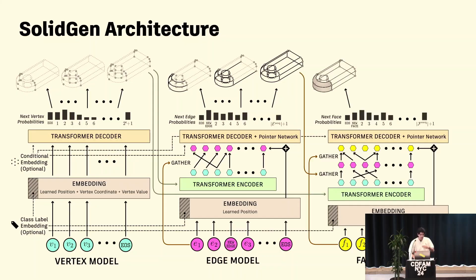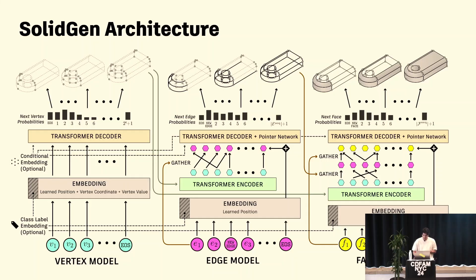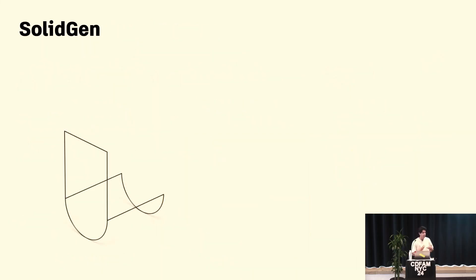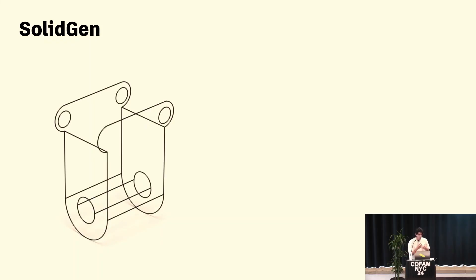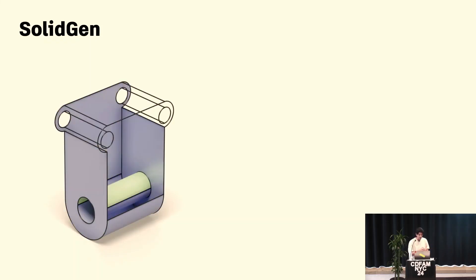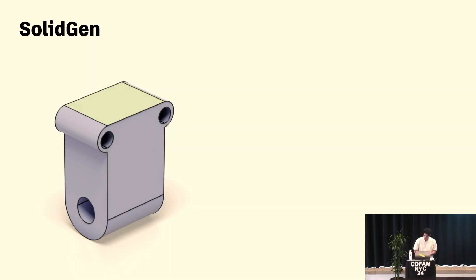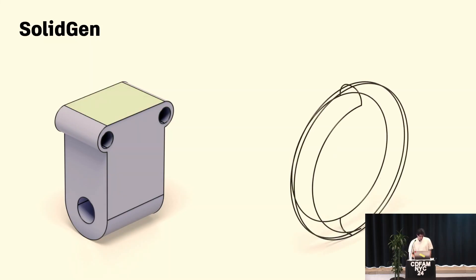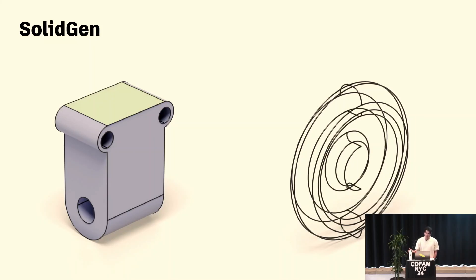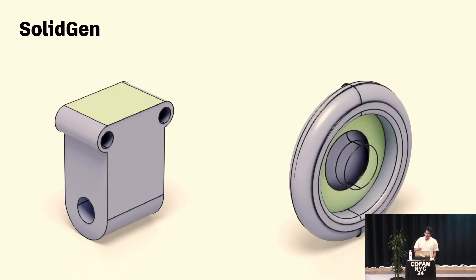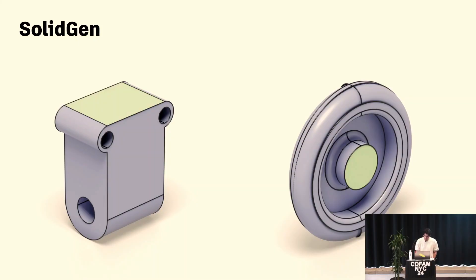The final process points to those edges to say which ones form different faces of the solid model. When you watch the model generating these things sequentially — predicting edges and then predicting faces — it makes a pretty animation. What's interesting about SolidGen is that it uses analytic surfaces like cylinders and planes, but it can't do the more freeform stuff you might want for industrial design applications.